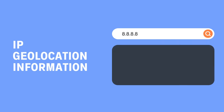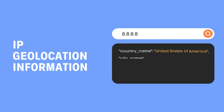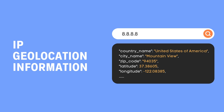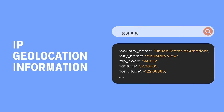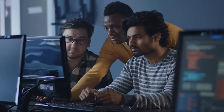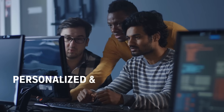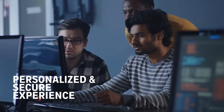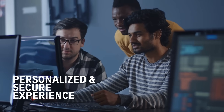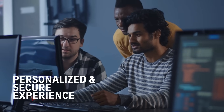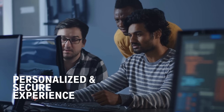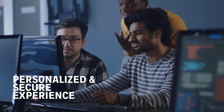Get detailed information like country, city, zip or postal code, and coordinates in milliseconds. All this information is delivered in an instant, enabling you to provide a personalized and secure experience for your users.